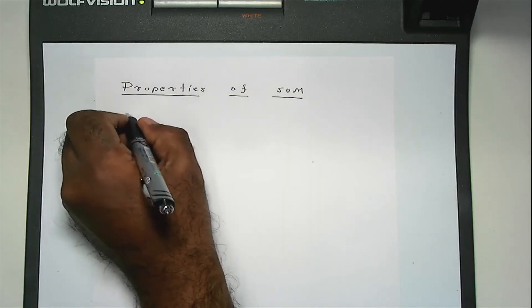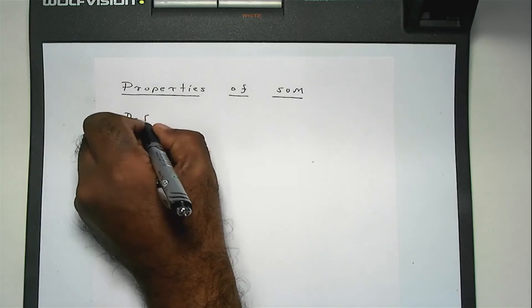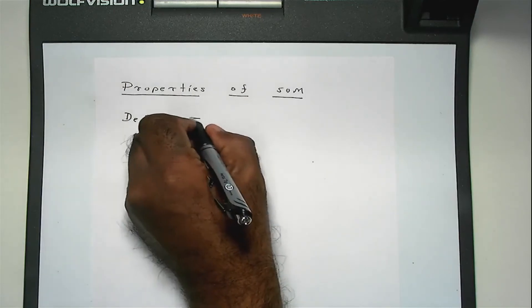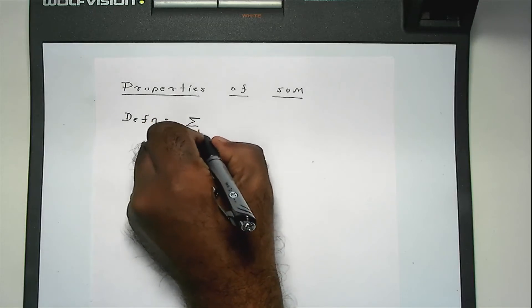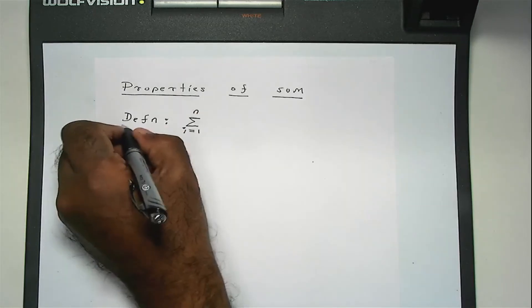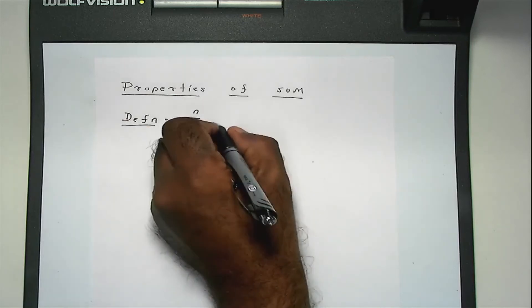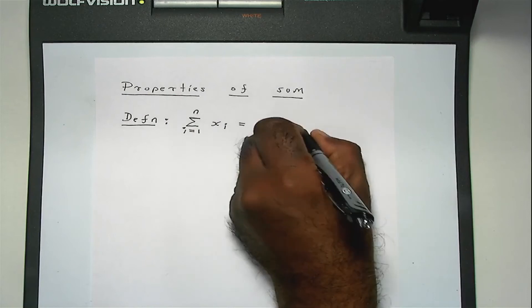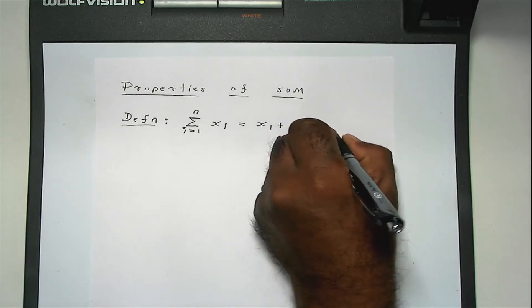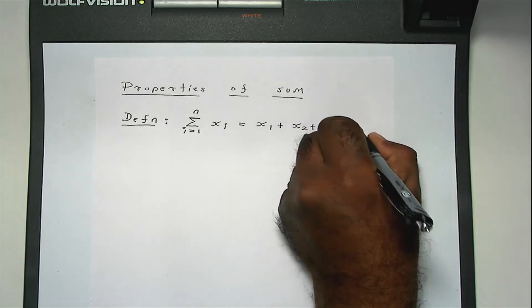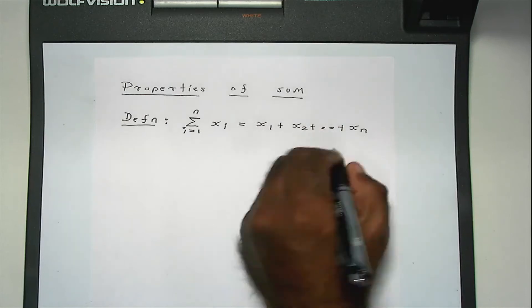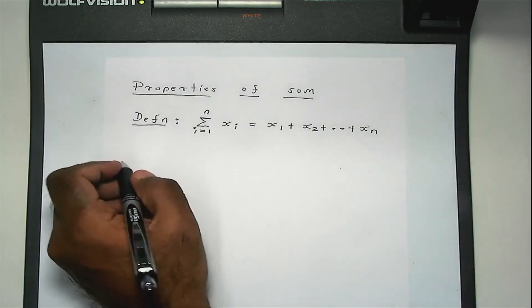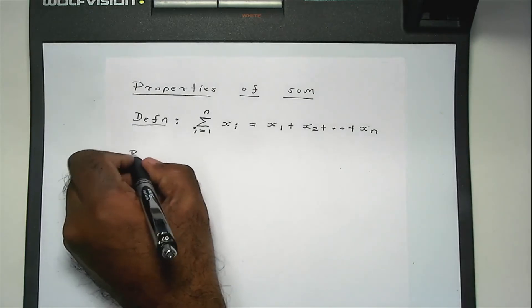The definition of a sum—I'm sure all of you know this—is as follows: sum I from 1 to n of XI is defined as simply the sum of the numbers. Now there are certain properties.